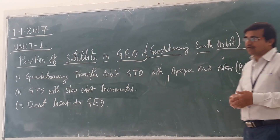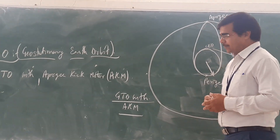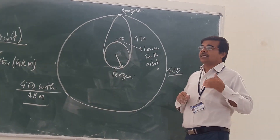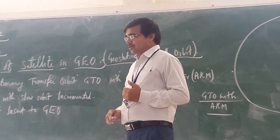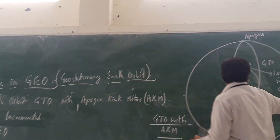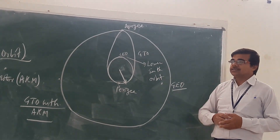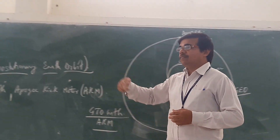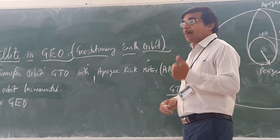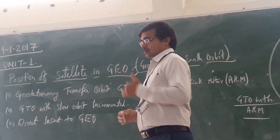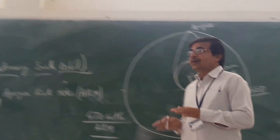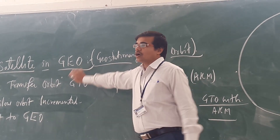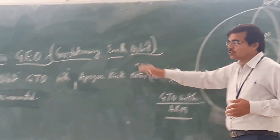Let us see what the first way is — how we go about launching the satellite into geostationary earth orbit. Geostationary means the satellite rotates around the earth in 24 hours, so it will appear stationary with respect to Earth. Our focus is on geostationary earth orbit satellites only.